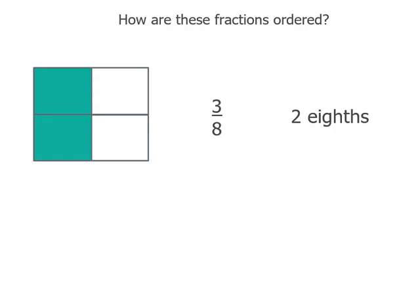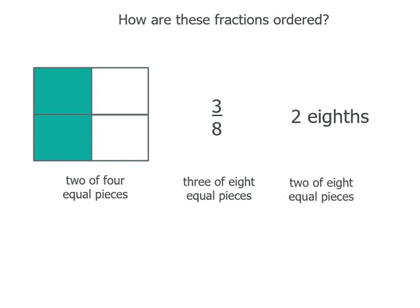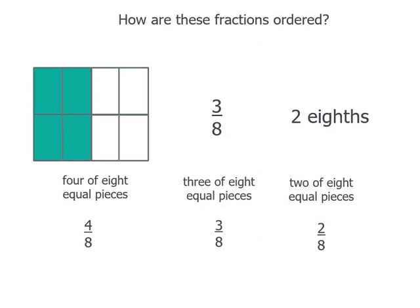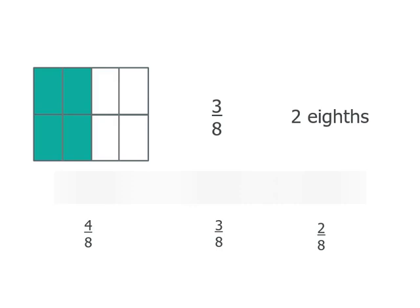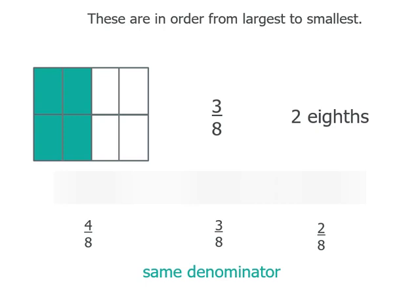This time we've got different denominators: 2 out of 4 equal pieces, 3 out of 8 equal pieces, and 2 out of 8 equal pieces. But if we draw some lines, our 4 equal pieces can be made into 8 equal pieces. We didn't change the size of the whole or the amount shaded — we just made smaller pieces, 8 instead of 4. So instead of 2 out of 4, we now have 4 out of 8. The symbols are still 3 out of 8 and the words are 2 out of 8. So we've got 4 eighths, 3 eighths, and 2 eighths — now with the same denominator, we can compare numerators and see they're in order from largest to smallest.